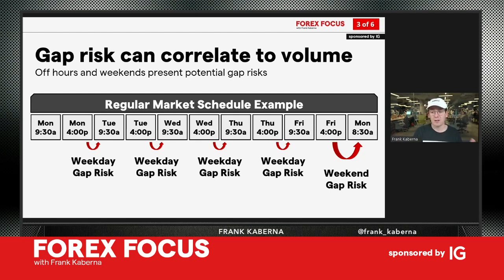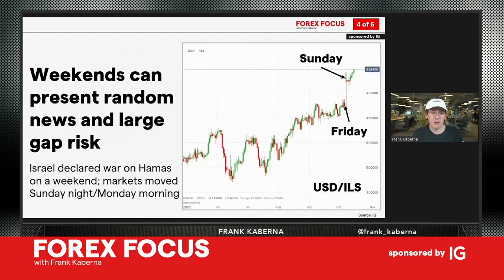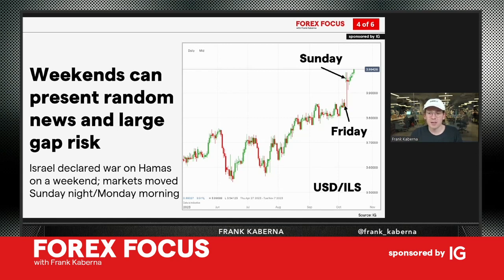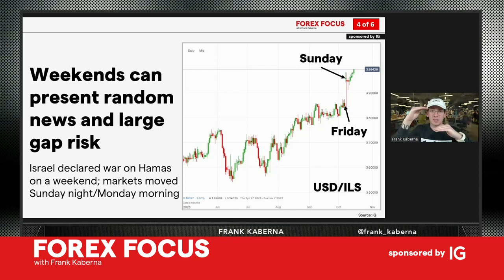Weekends pose the most straightforward gap risk, and news over the weekend can be a major driver of gap risk coming to fruition. In this example, Israel declared war on a weekend with markets not open, and here's the dollar versus the Israeli shekel not trading in real time as the declaration of war news came out. The market didn't trade from around 385 up to 386, 387 to get to where it opened around 395 — it simply closed Friday and opened Sunday. If you were long or short, you couldn't trade in between.